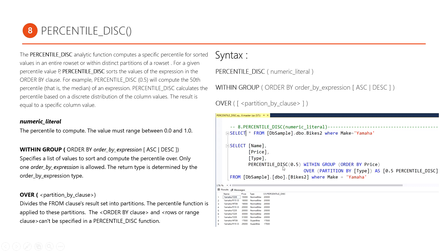The return type of this particular function is always a particular value from the price column. Within a result set you can see there are different amounts of price, but we are calculating the median value of the price column. The median value is 2000, and this 2000 value will be returned by this PERCENTILE_DISC function, appearing as a generated column. Based on our requirement we apply a particular number.